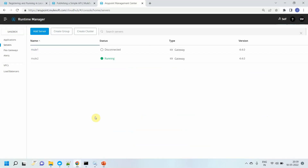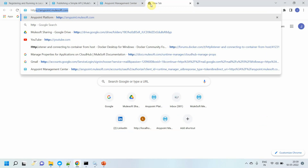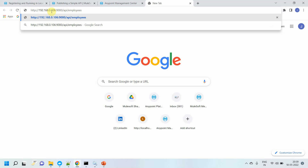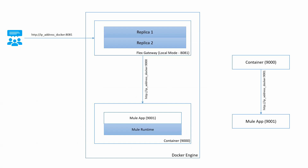I will send the request to the container and the container will forward the request to the Mule app. So I can go to HTTP and you can see 192.168.0.106 — this is the IP address of my Docker container or Docker engine. I hit enter and got a successful response. I sent the request on my Docker container and the container forwarded my request to the Mule application, which is listening on port 9001. The container is running on port 9000.